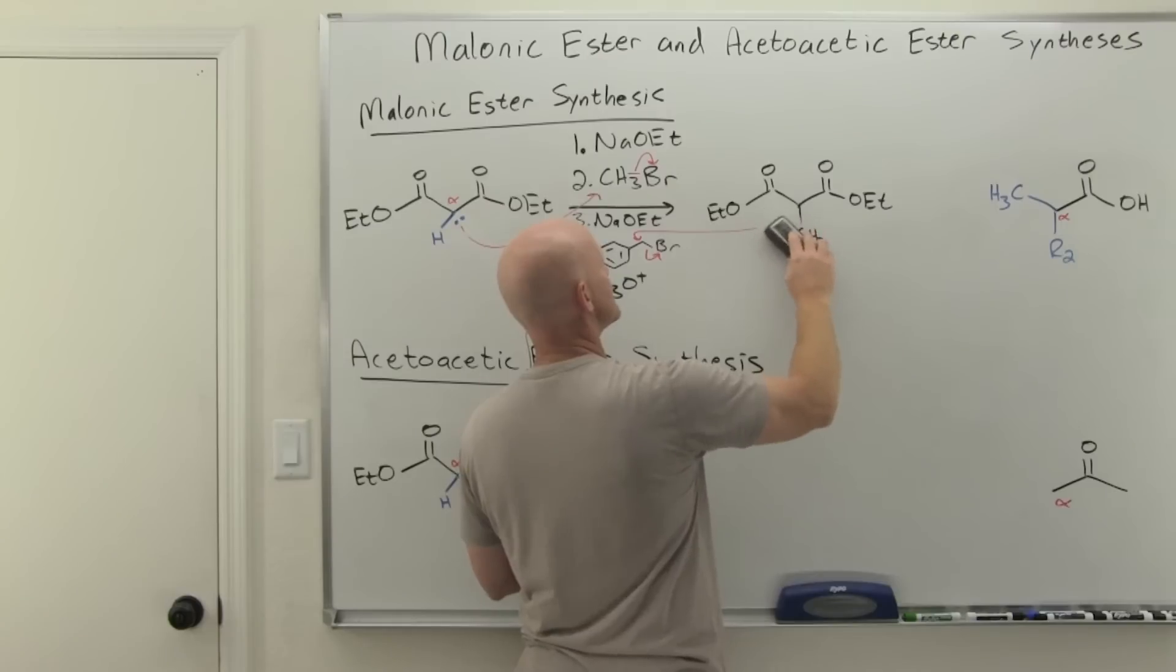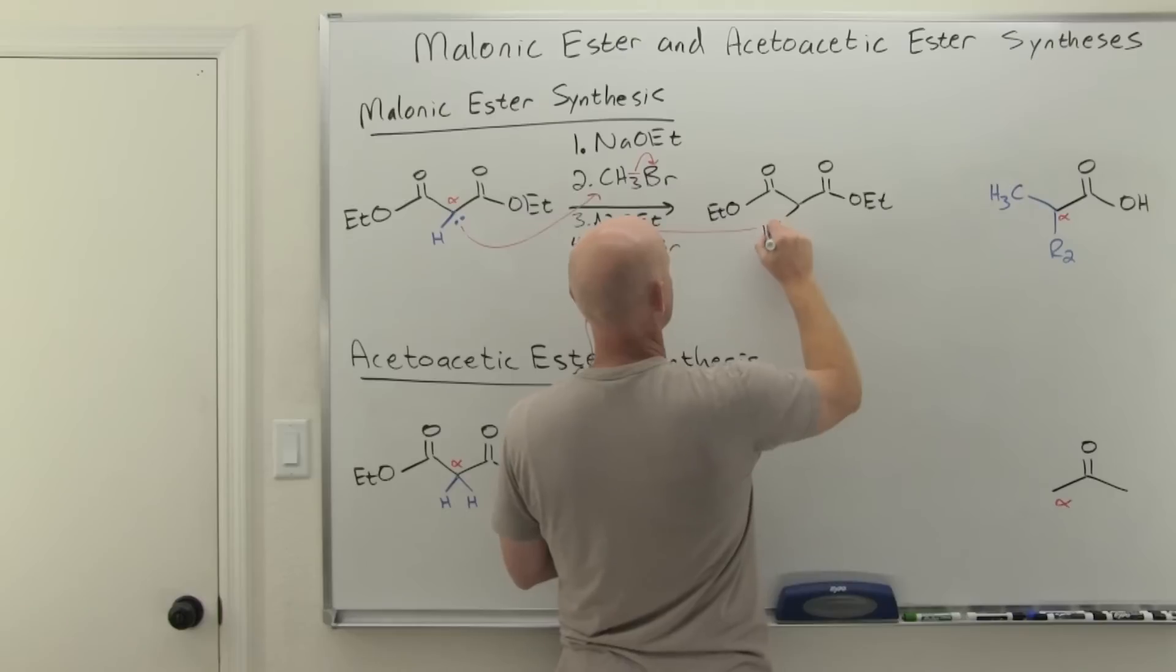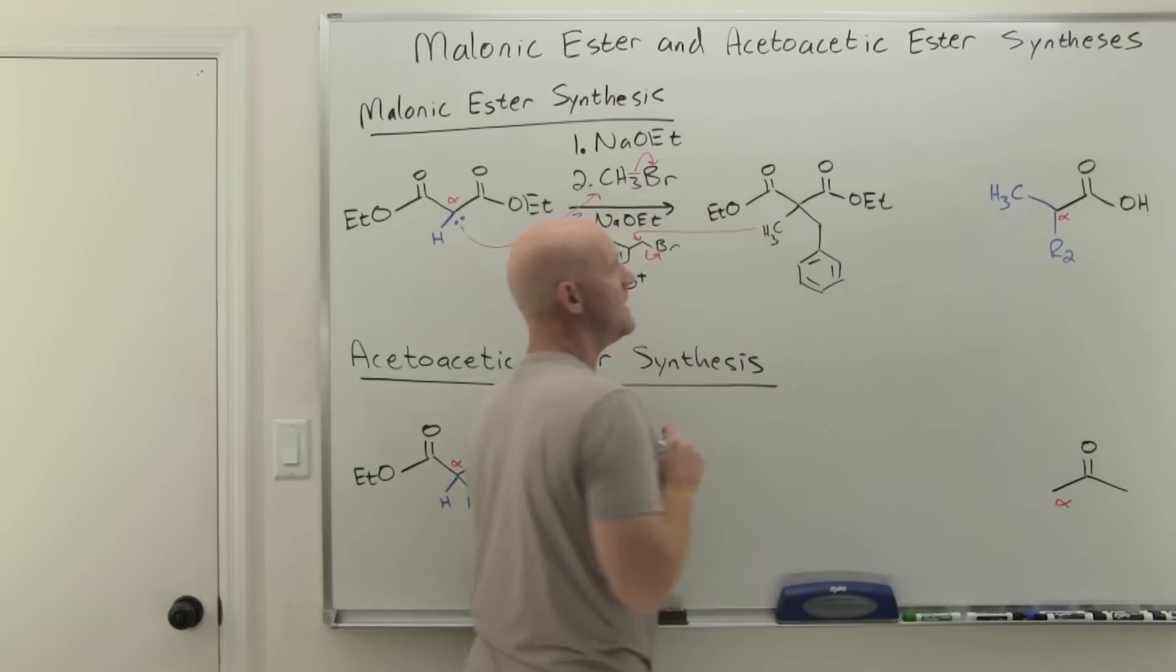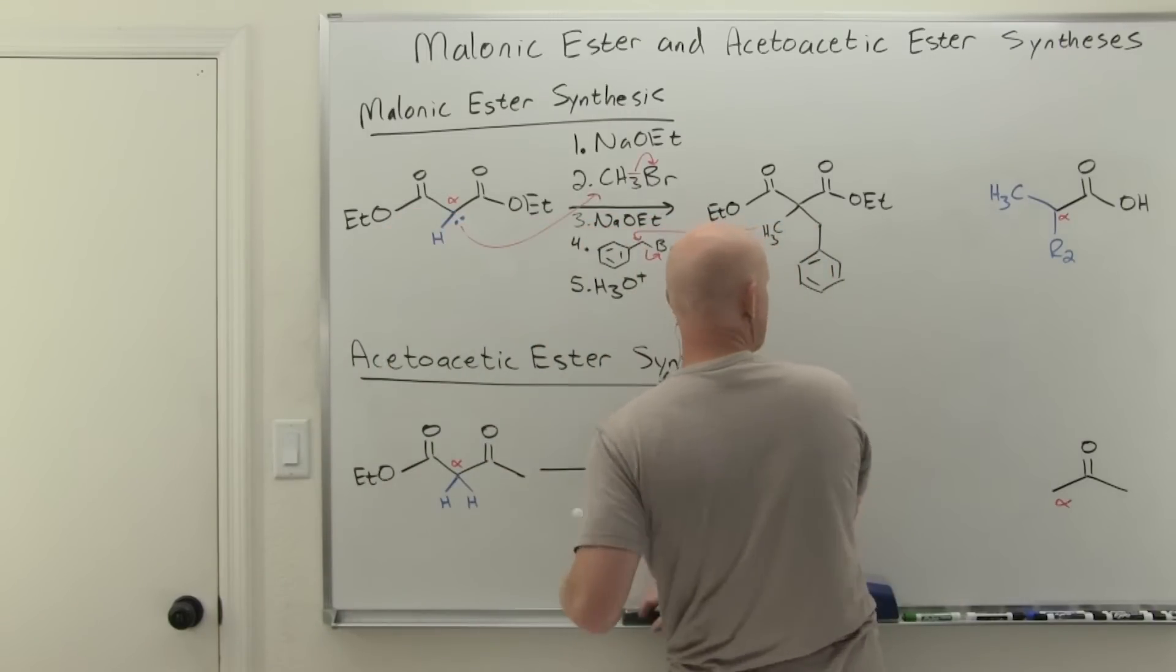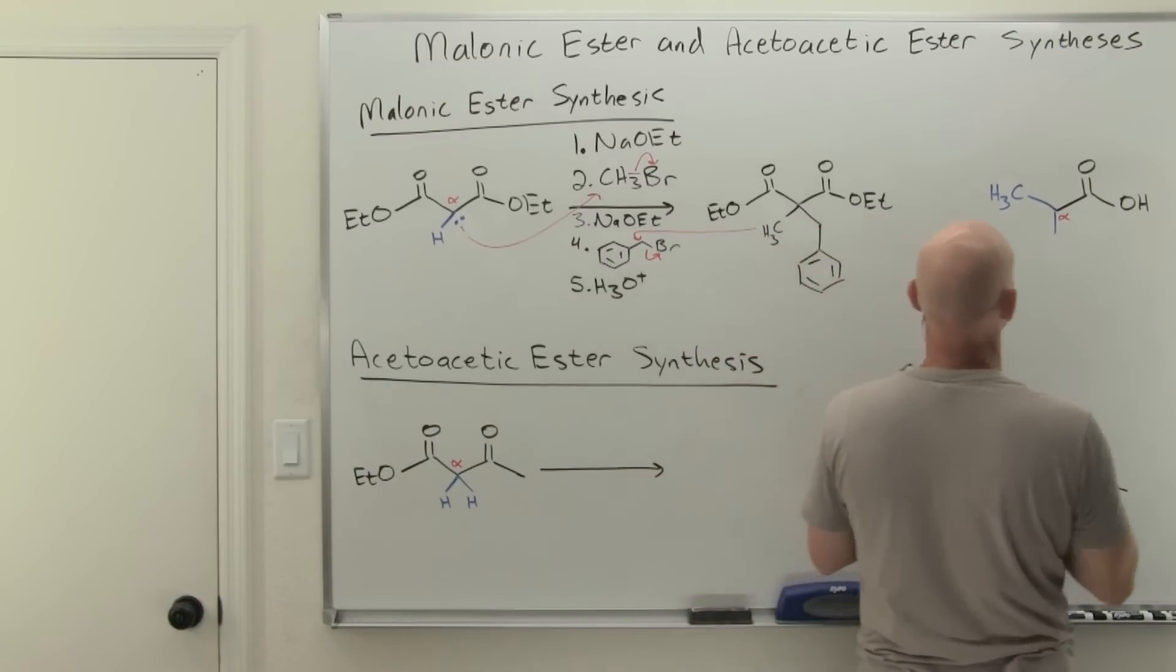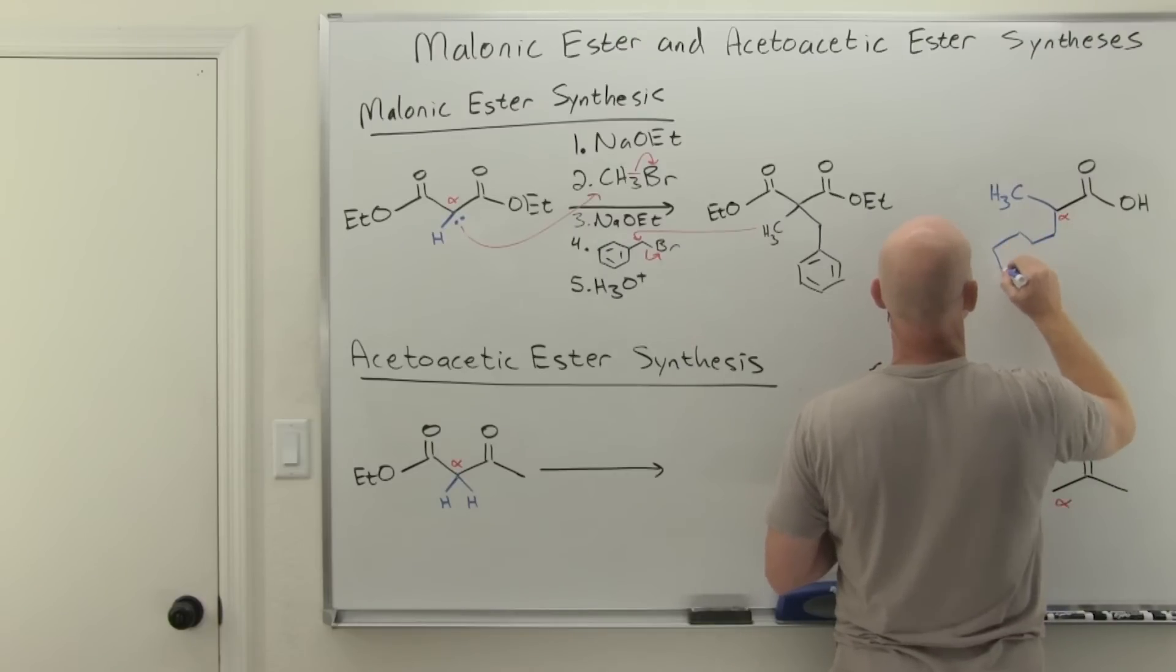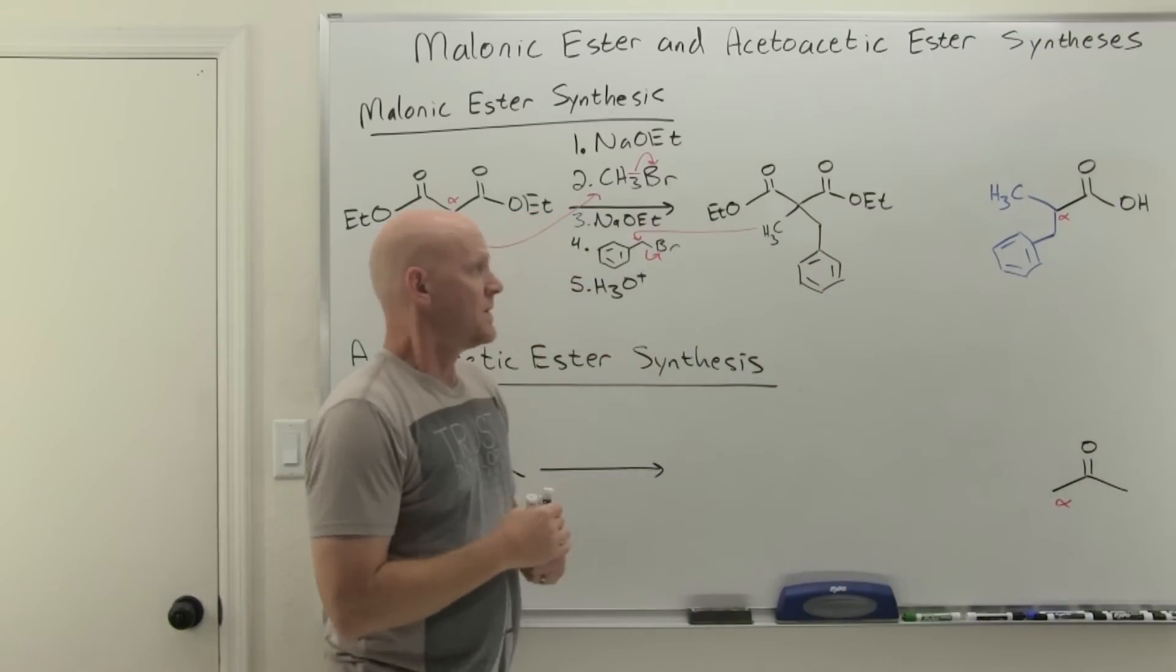And now we'll have ended up with, rather than redraw this, I'm just going to move this around a little bit. So we had that methyl group on one side and now we've got the benzyl group on the other. And that means that R2 written right here is that benzyl group.